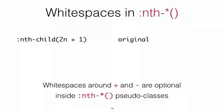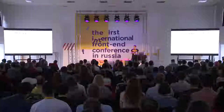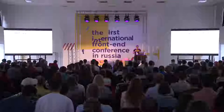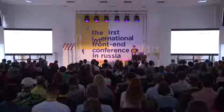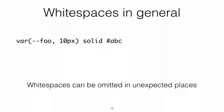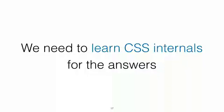An nth-selector can contain a plus and a minus, but in this case whitespaces are optional — the same thing, but a different rule. If you look at whitespaces in general, most of them are optional and you can remove all of them in some cases. It may be difficult to understand what is going on here. To find the answers for this question, we need to learn some CSS internals. It's another story inside this story: tokens.